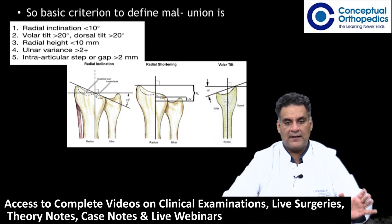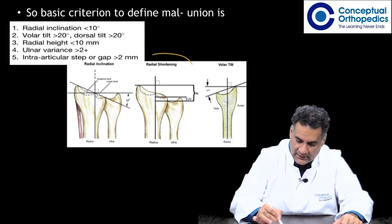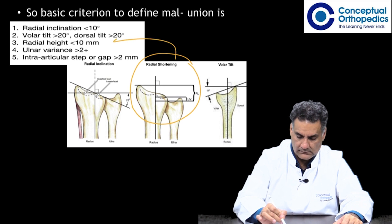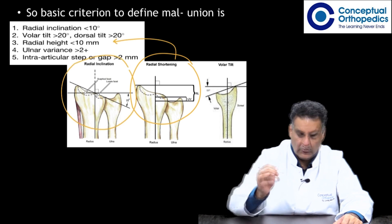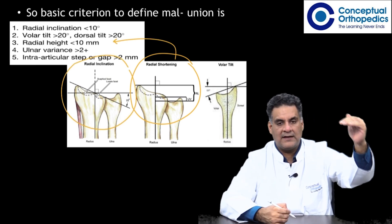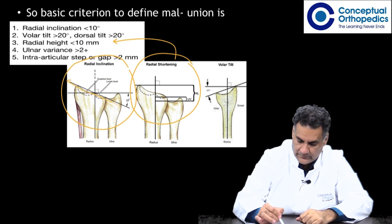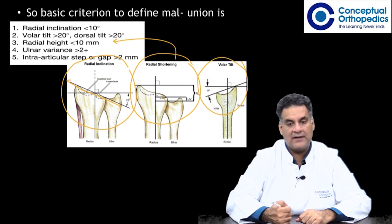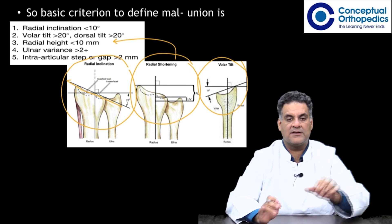Looking at the radiograph, the shortening or radial height, the inclination representing the slope between the lateral and medial articular surface, and the tilt are identified. Normally the tilt is about 11 degrees, but if it is more than 20 degrees in either direction it is an indication for correction.